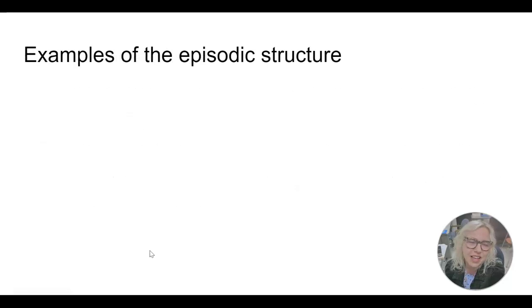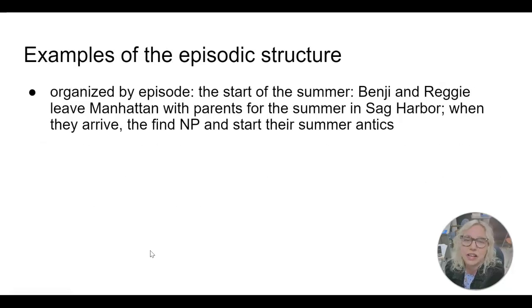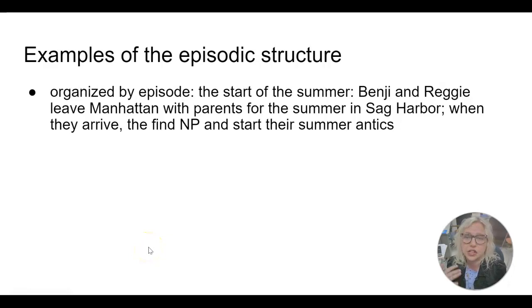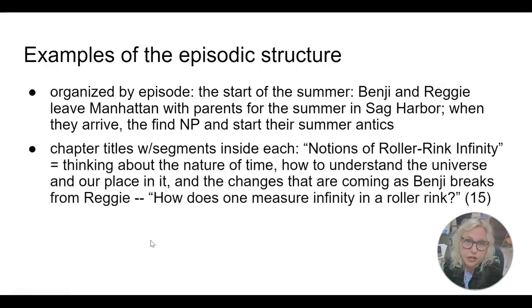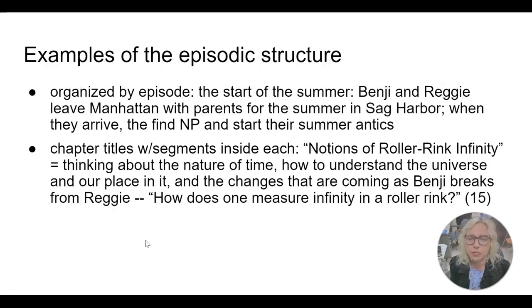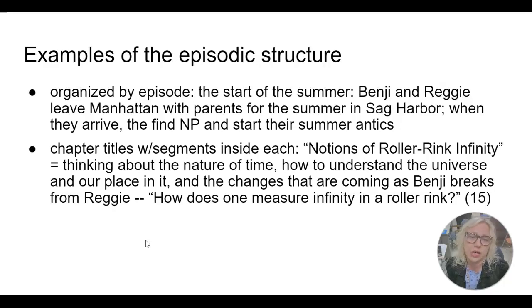How about the episodic structure — the fact that it's organized by episode? This first chapter is organized around the start of the summer: Benji and Reggie leave Manhattan with the parents for Sag Harbor, they arrive and find NP and start their summer antics. That is the time period of this first chapter. But the chapter title, 'Notions of Roller Rink Infinity,' is not actually from that current timeline — it's from a flashback two years prior when Benji is thinking about an experience he had at the roller rink with a girl in eighth grade.